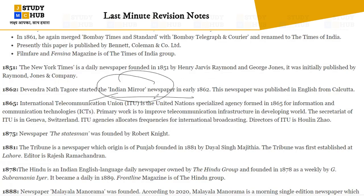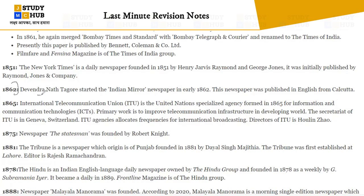In 1862, Devendra Tagore started the Indian Mirror newspaper. This newspaper was established in England from Calcutta. You should be aware of the newspapers, their founders, and important related information including their launch years.